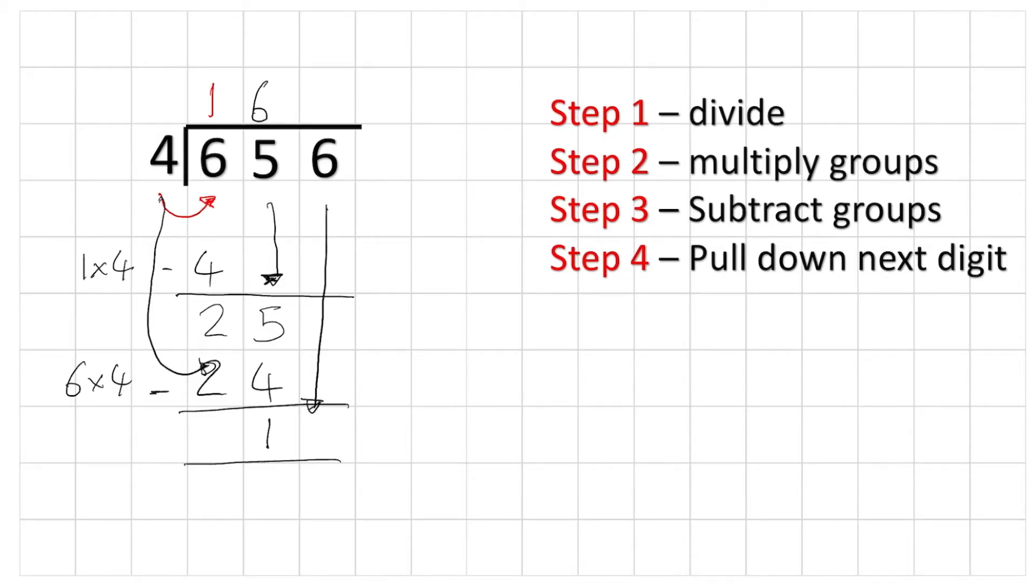Bring down my 6 and I'm ready to answer my final part. How many 4's are there in 16? 4, 8, 12, 16. We have 4. Now I can do my 4 times 4 and I work out that that's 16. 16 subtract 16 is 0, my magic number, meaning that we've finished this question. So 656 divided by 4 equals 164. Good job.